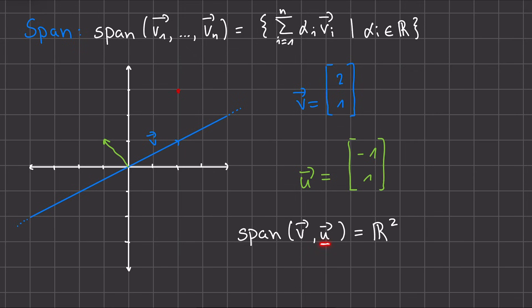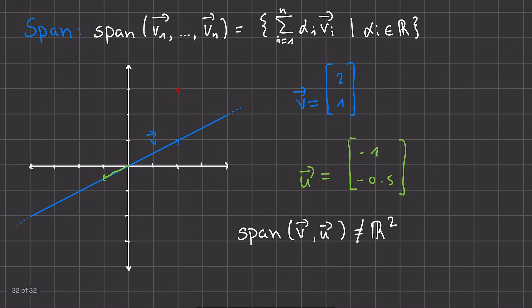But if we chose a different u, this would not have to be the case. If, for example, we chose this vector for u here, we see, sketched into this graph, it is just the opposite direction of this v. And that causes the span no longer to equal the R².